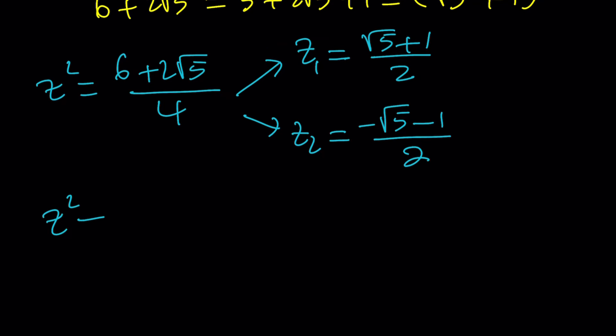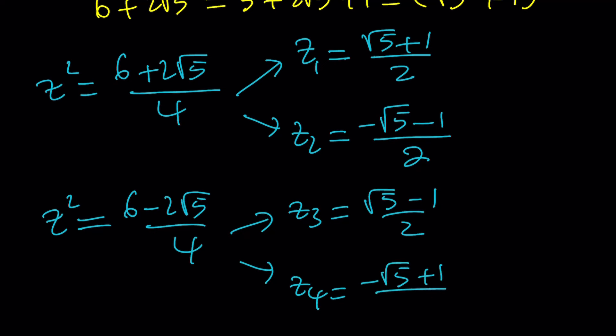If you set z squared equal to 6 minus 2 root 5 over 4, you'll get similar results. Z sub 3 is root 5 minus 1 over 2, and z sub 4 is negative root 5 plus 1 over 2.